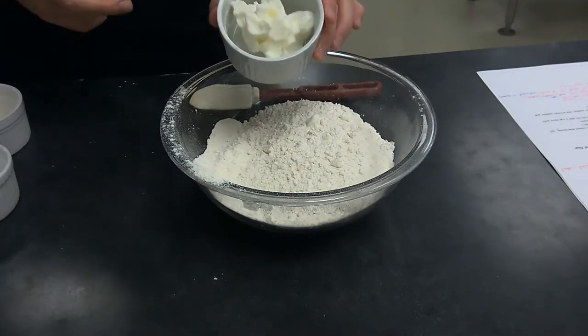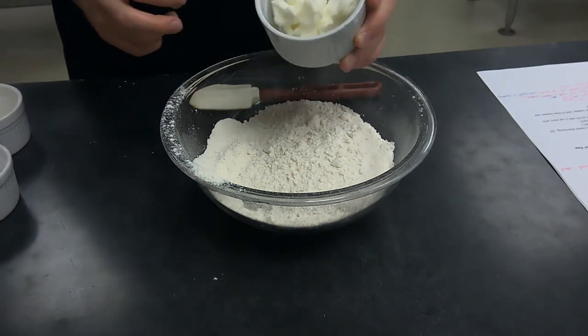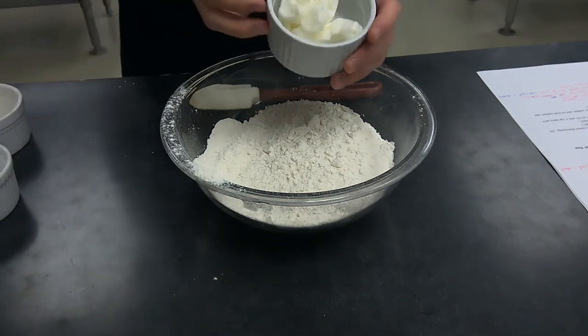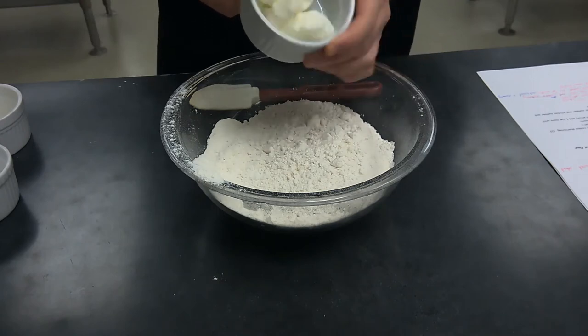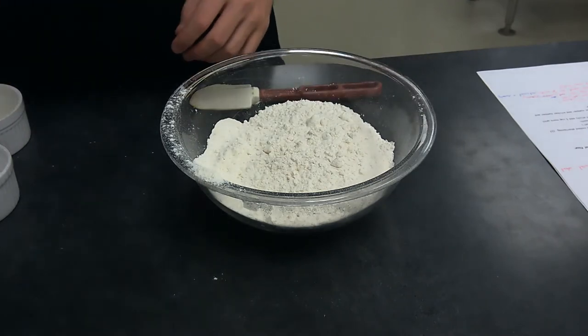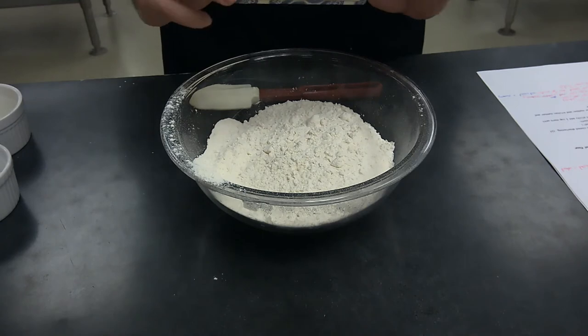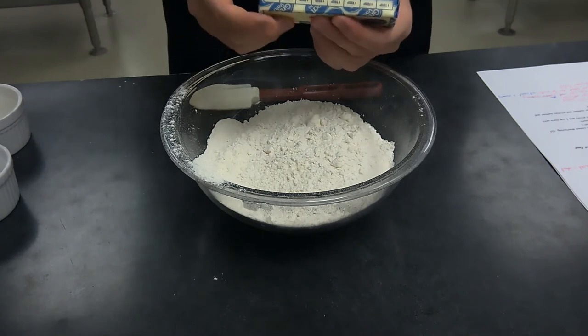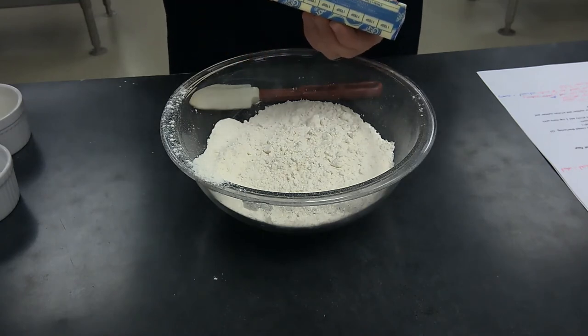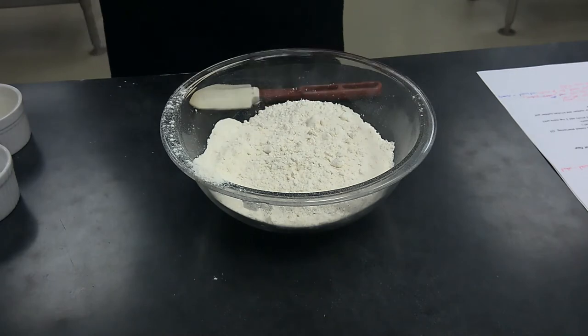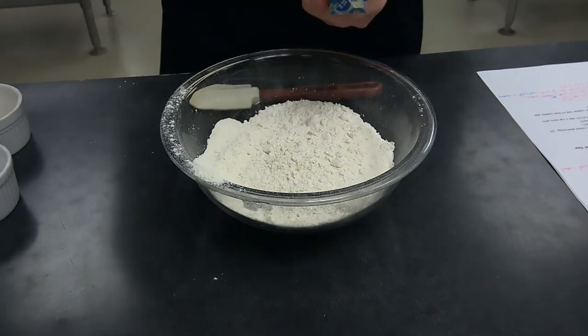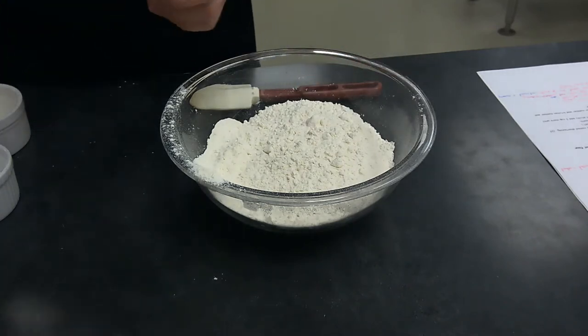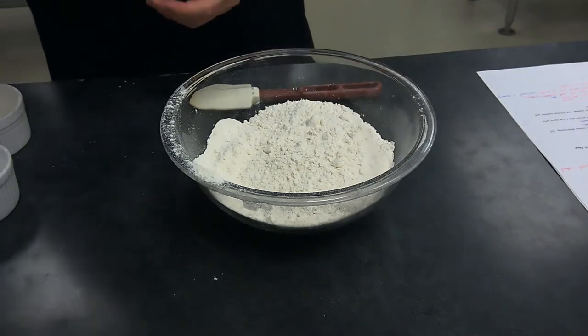Now I would recommend in this case to go with shortening. Shortening produces, while it doesn't produce as much flavor, it does produce a much softer roll which is what we're shooting for here. Now you can go with butter, that is okay. You just want to make sure that this is soft and at room temperature before you add it into the dough. Also, because butter has a little bit of water, you're probably going to need to add a little bit more flour to this, so again that's why I would go with shortening.